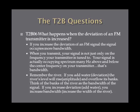What happens when the deviation of an FM transmitter is increased? If you increase the deviation of an FM signal, the signal occupies more bandwidth. Your signal actually occupies more spectrum above and below the tuned frequency, and the space it occupies is called bandwidth. If you add water or increase the deviation, the river's level will rise and overflow its banks — so increasing deviation increases bandwidth along with amplitude. Unless you really want to get into theory, you should probably just memorize this.